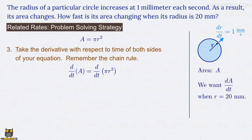On the left-hand side, the derivative with respect to time t of the area A is the rate dA/dt. On the right-hand side of the equation, we can pull π out since that's a constant, and we're left with the derivative d/dt of r squared. And that derivative is 2r times dr/dt.